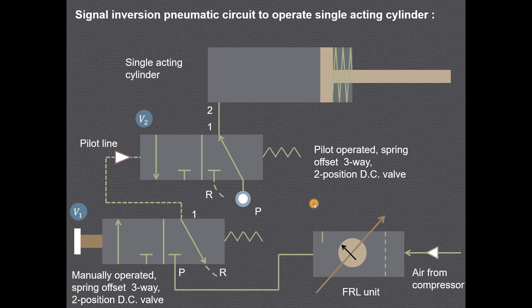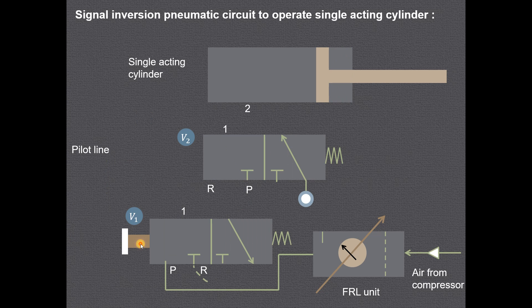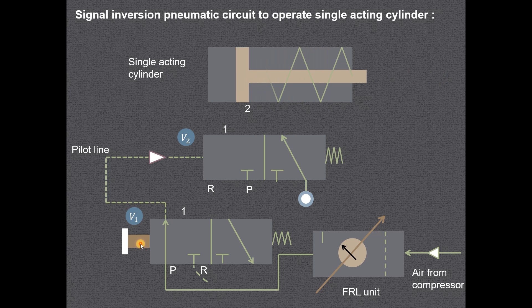In the second position, when the manually operated spring offset three way two position direction control valve is operated — that is when you press the button to get the left envelope mode — the pilot line will now be in operation. From the left envelope mode, retraction of the cylinder is done: port 2 is now connected with port 1 and air from the cylinder side goes to the atmosphere. In this way the signal inversion pneumatic circuit works.